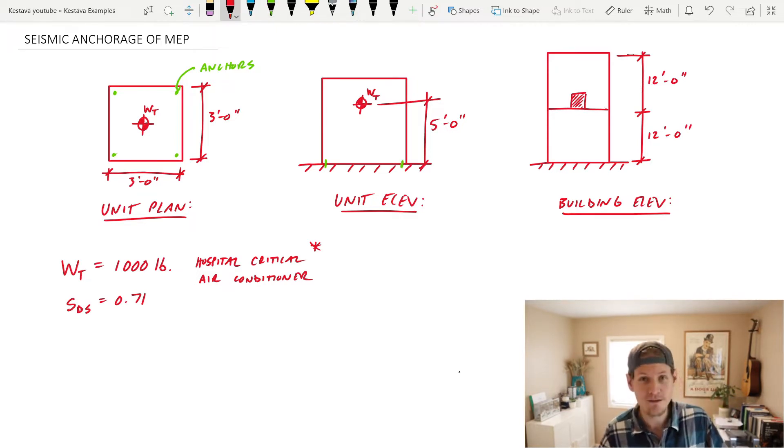We have a unit elevation, so the center of gravity of the unit, which is what I'm denoting with that datum point, is located five feet above the ground surface. Then we have a building elevation over to our right, which is right here. It's just a two-story building, 12 feet each story.